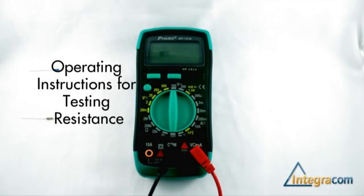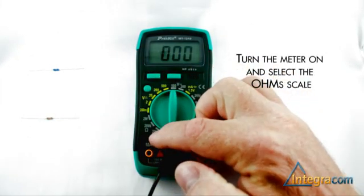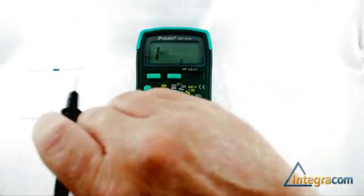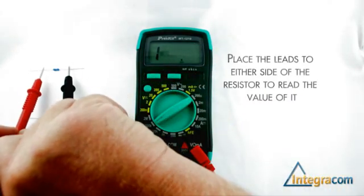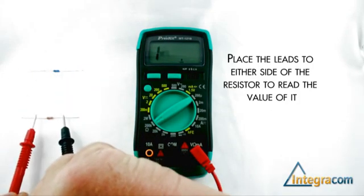We can also use this meter to measure resistance. Turn the meter on, select the ohms scale, place the leads either side of the resistor, and read the value of each resistor.